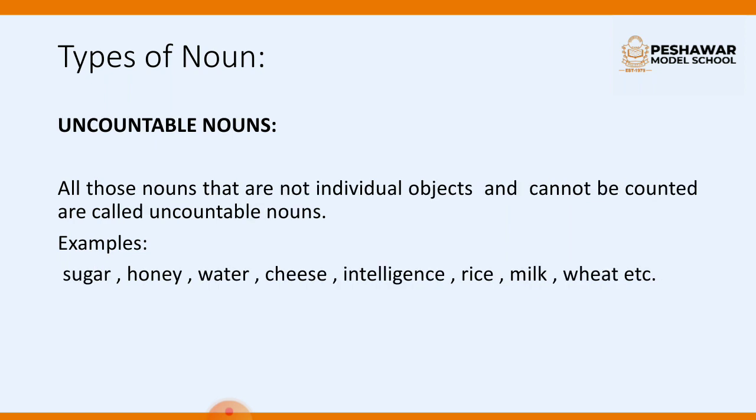Now, uncountable nouns — as the name shows — are those which cannot be counted. The reason is that uncountable nouns are substances, concepts, etc., that we cannot divide into separate elements. We cannot count them.